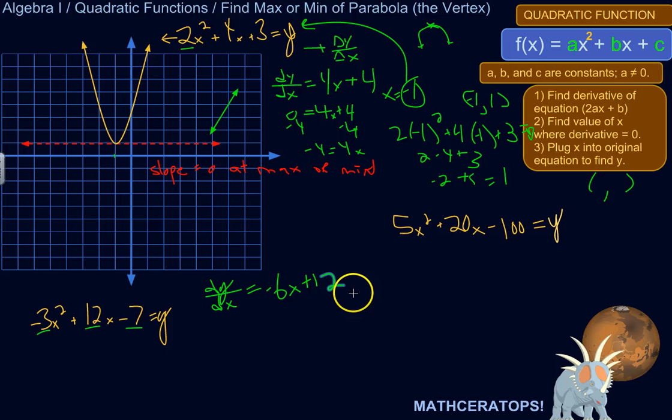So now I want to find out, well, when is this equal to 0? When is my slope 0? When is the point, where is the point on the curve where the line tangent to that point is a horizontal line? Because that's going to be my max or min, right? You know, if I have a max like that, the top of that is going to be a straight line, too. The slope of the top of that is going to be a straight line. Okay, so I want to set that equal to 0.